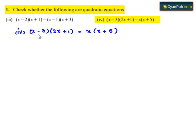So on the left hand side, we have x minus 3 times 2x plus 1, and on the right hand side, we have x times x plus 5.